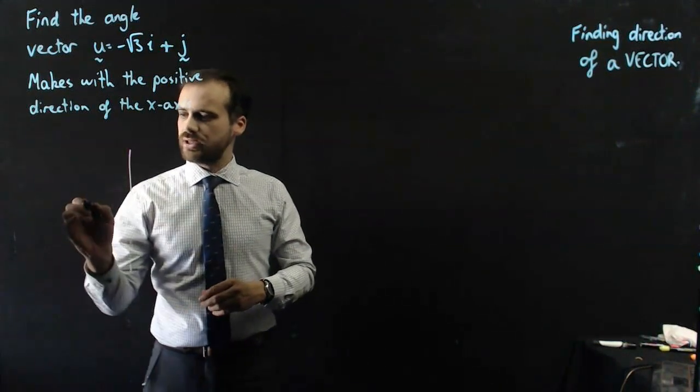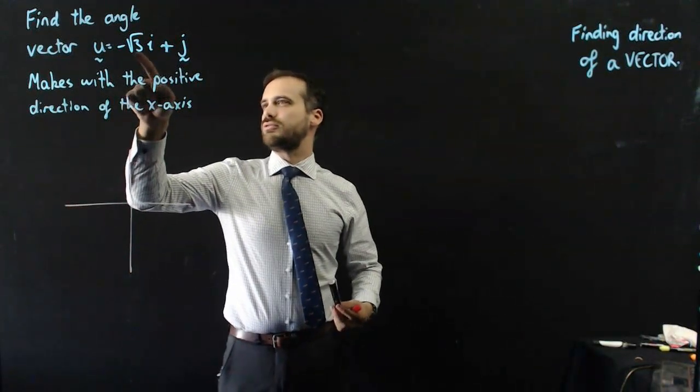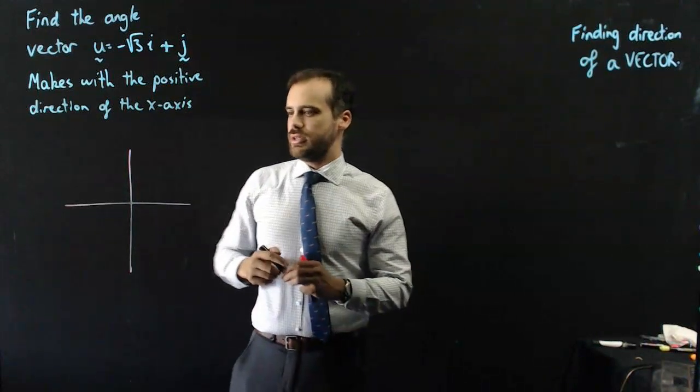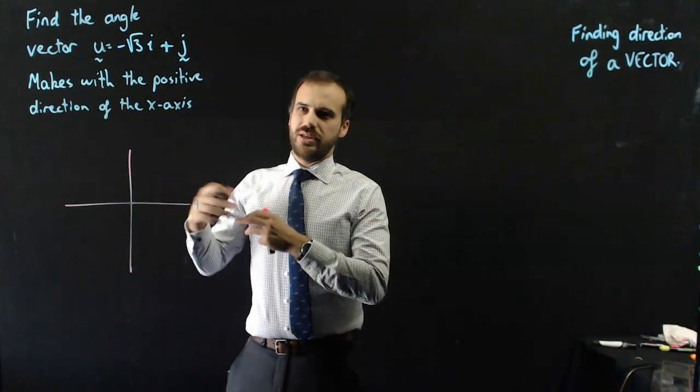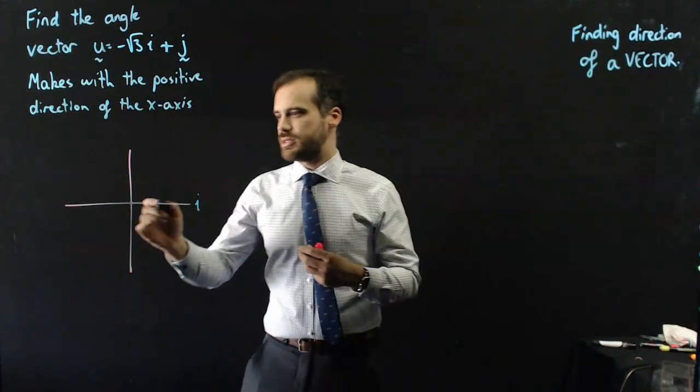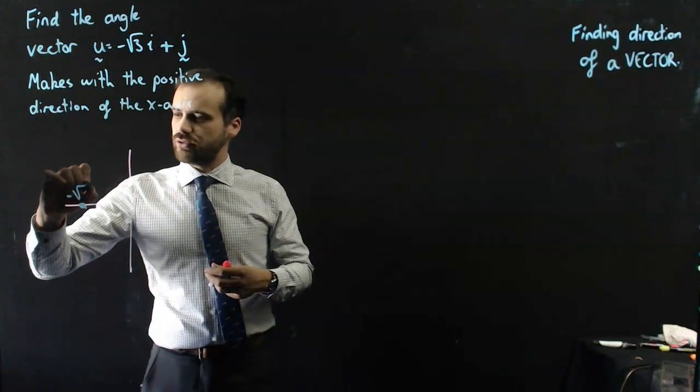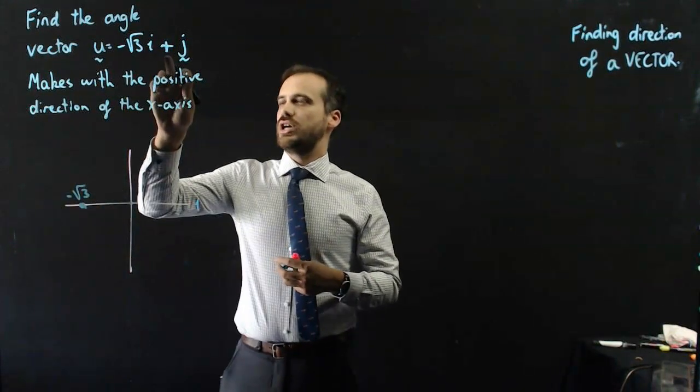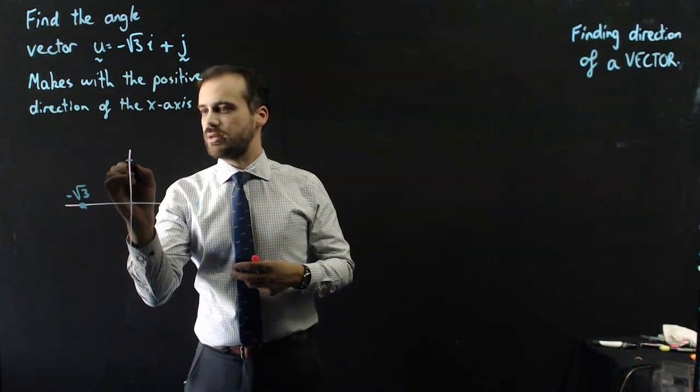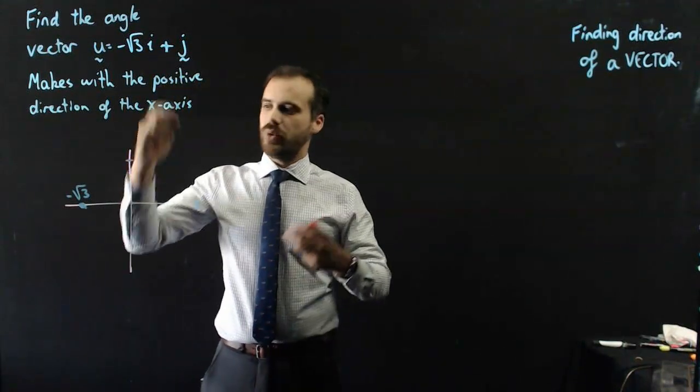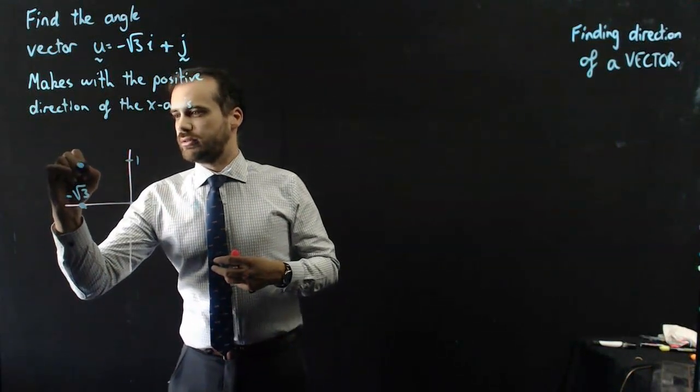Now, let's take a look at what that vector looks like first of all. Negative root 3i. So this is our i here. Now, negative root 3 is like 1 point something. Not that it matters too much to me. But I'm just going to put it over here somewhere. Negative root 3. And j, that's a positive j. So it's like over here somewhere. And it's just the number 1, 1j. So that's what my vector looks like.